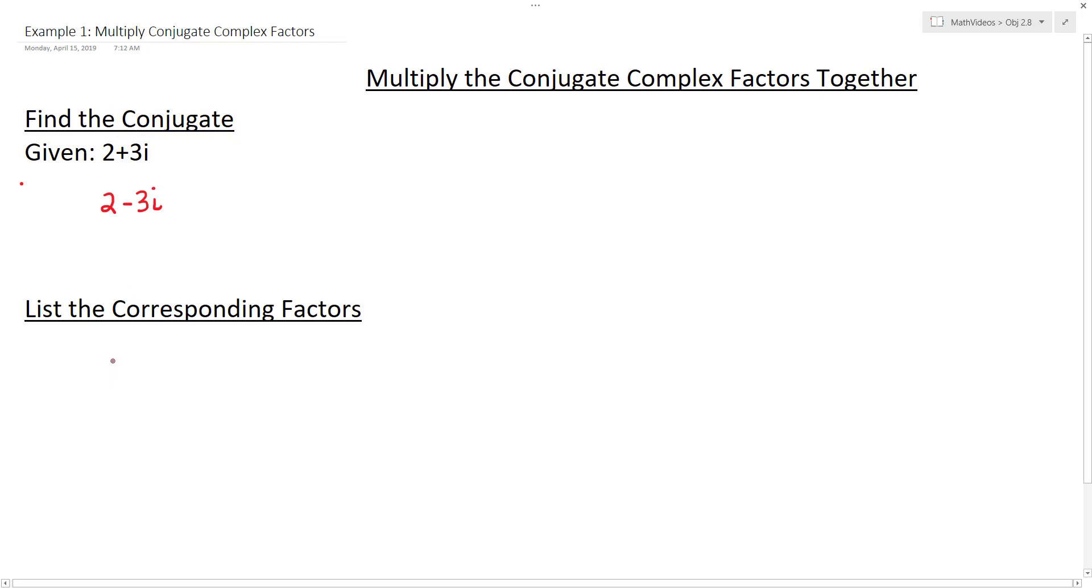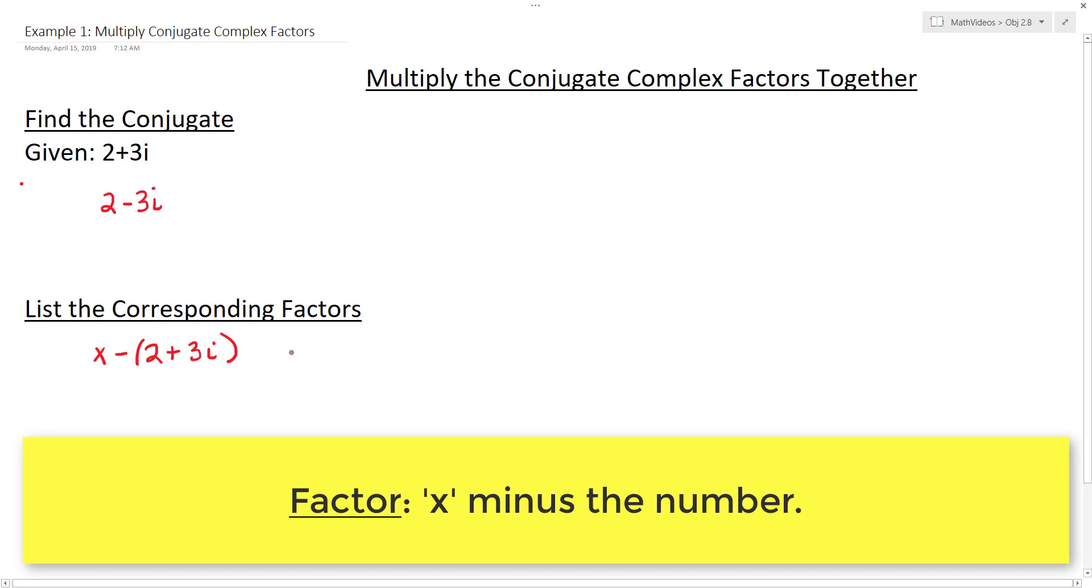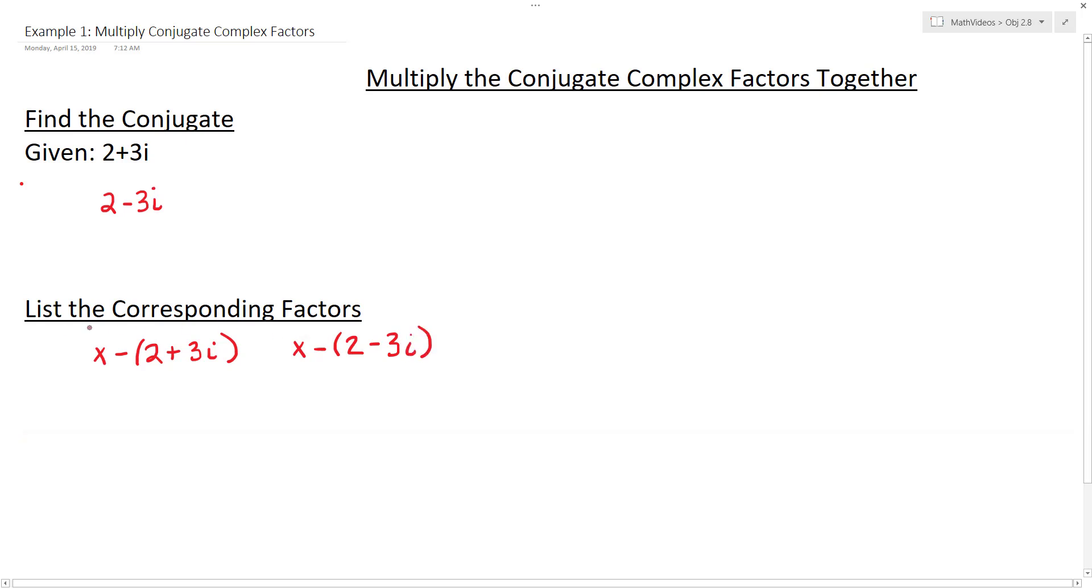Now if we want to list the corresponding factors for these two complex numbers, all we need to do is x minus 2 plus 3i, and then also x minus 2 minus 3i. And so often what I do is I kind of group that complex number to show that you are minusing that whole complex number. That's how we start off.